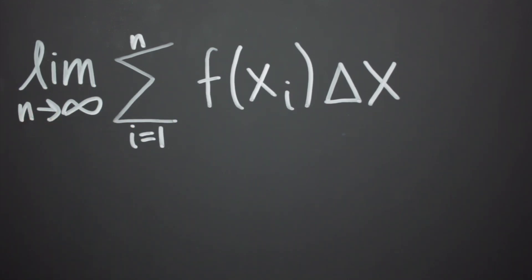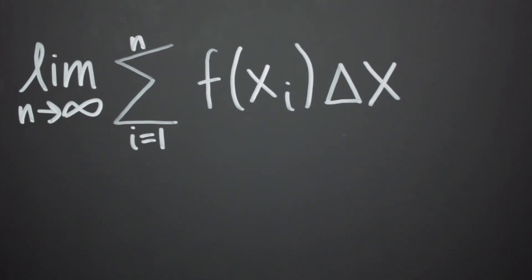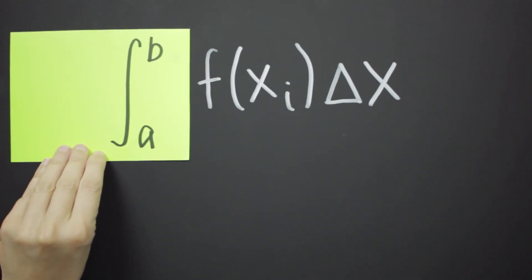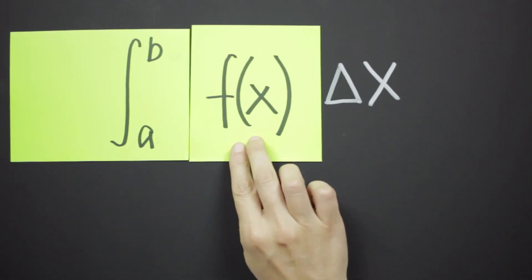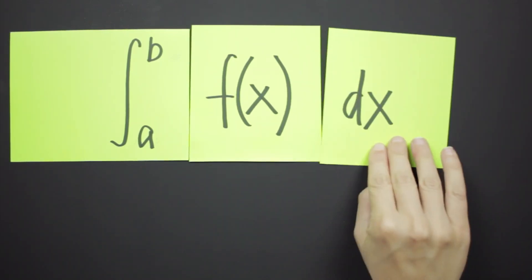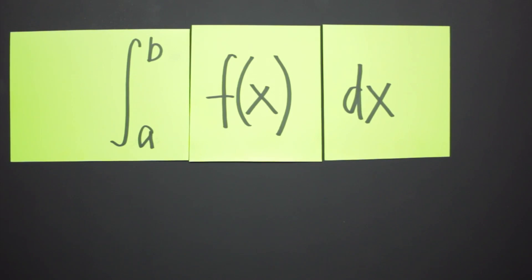And now this Riemann sum has actually become an integral already, it's just written differently. To write it as an integral, the limit and summation notation become the integral, the function f becomes the function f, and the delta x becomes dx. And these two things are exactly equal.